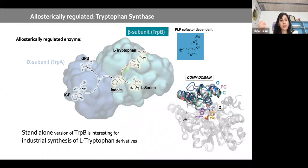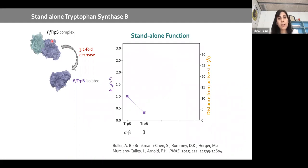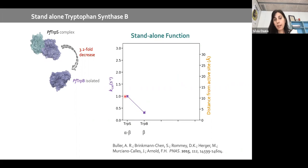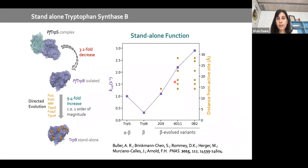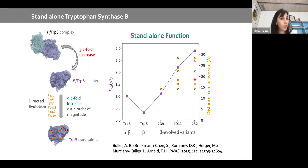The Arnold lab took Pyrococcus furiosus tryptophan synthase and applied directed evolution to make a standalone beta subunit. Without alpha, kcat drops, but directed evolution enhanced kcat ninefold, mainly through mutations far away from the active site that are also not located in the COMM domain. This was our starting point for exploration.